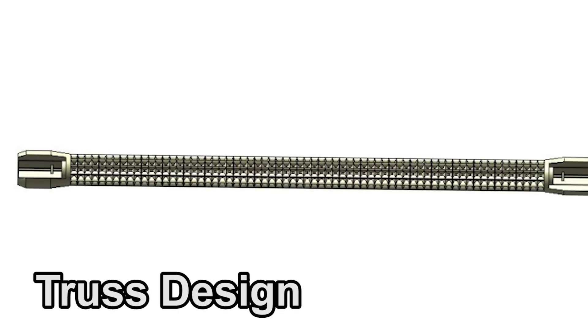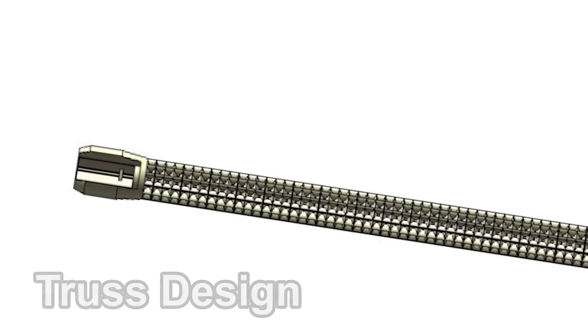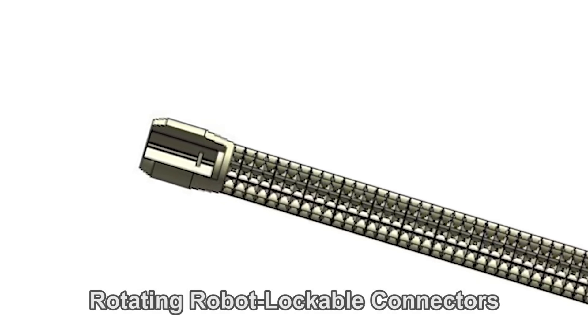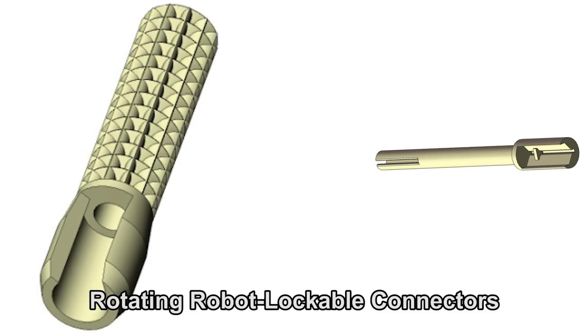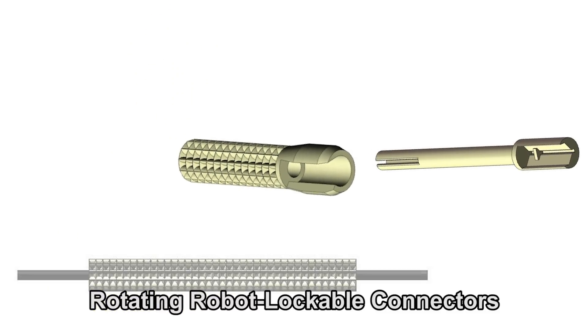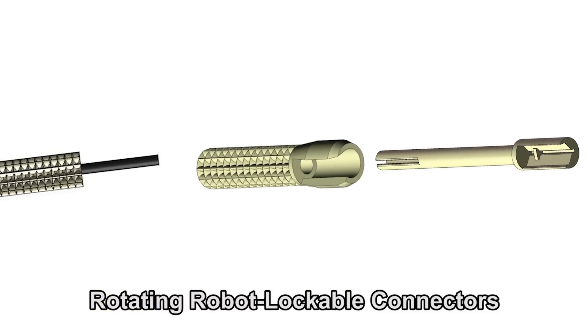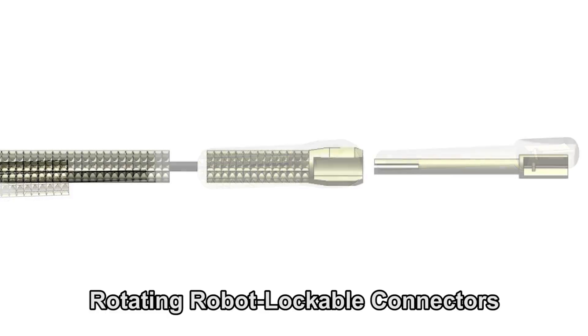The truss is designed to allow the robot to easily grab onto it using its gears and to resist motion in the direction opposite to which the robot is trying to move. It uses robot lockable connectors that can be adjusted using the rotational mechanism on the robot. A carbon fiber rod inside of the connectors helps to reinforce them.